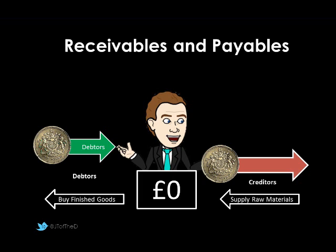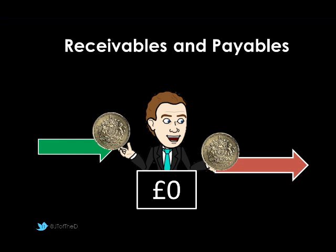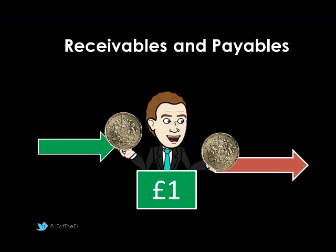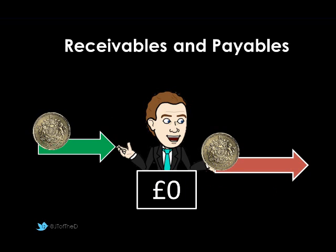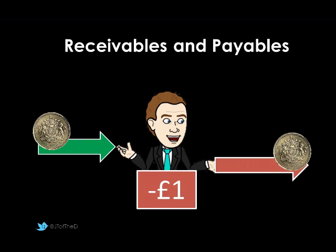What makes them debtors and creditors is the credit facility we allow them. A key thing to think about is the timing of these payments. If we get money in from our debtors before we have to pay our creditors, our business has better cash flow. If, however, we're paying money out before we receive it, the business could have cash flow problems, and we're taking money out of the business that we could be using.